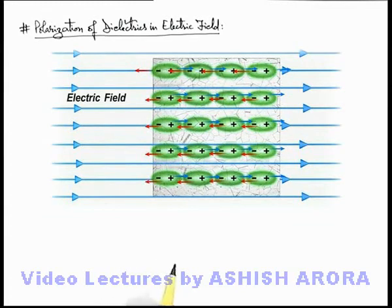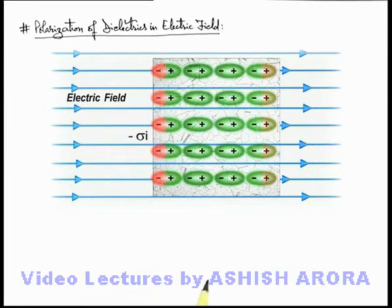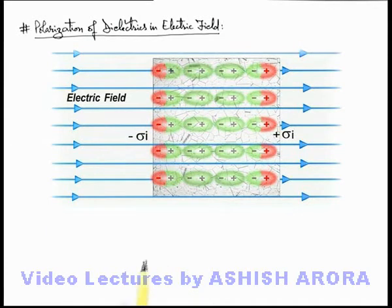Once the dipoles get aligned, here in this situation you can see, on the left surface of dielectric slab there are some negative centers, on the right surface there are some positive centers. In the volume we can ignore all the positive and negative centers because their overall electric field exists only within the volume of this slab.